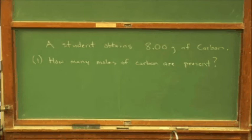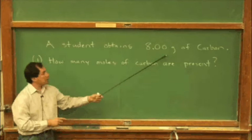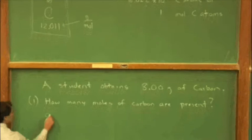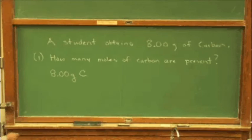We have a conversion factor. We are weighing something out in our world, grams. And we have a conversion factor from the periodic table of the elements, 12.011 grams per mole. So we'll start with what we've weighed out, 8 grams of carbon. We'll use our conversion factor.